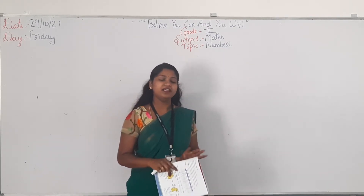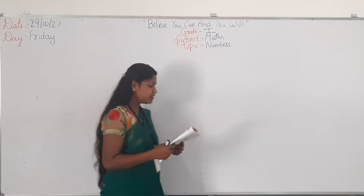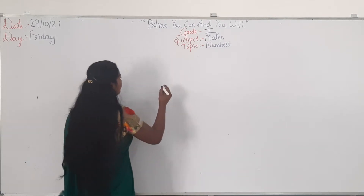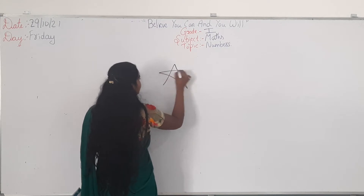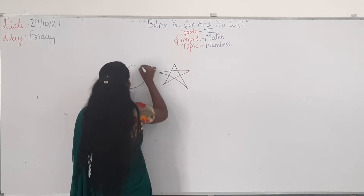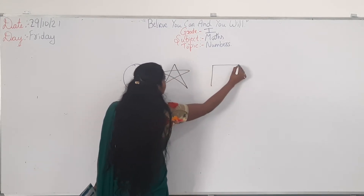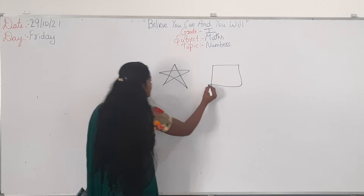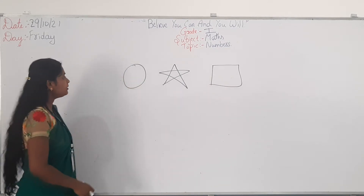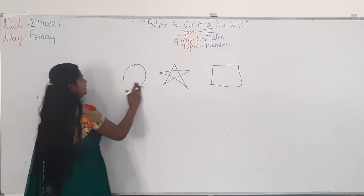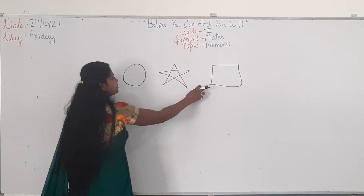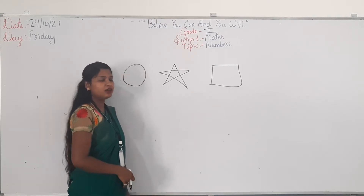Revision is going on, right? So, see here — we will learn about different numbers. Students, can you see here? What are the shapes I have drawn here? Circle, star, square.